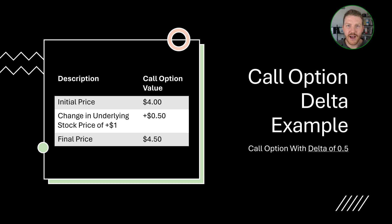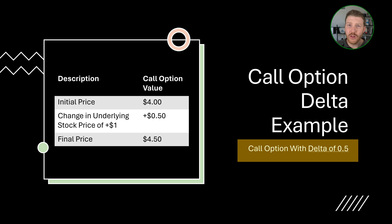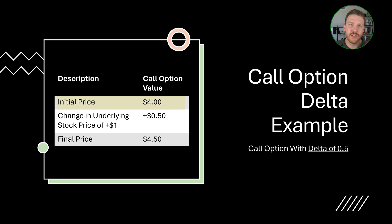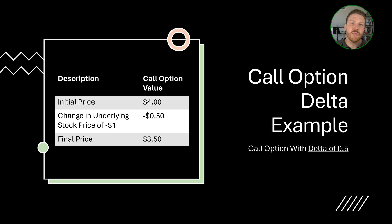Let's dive into an example. Imagine there is a call option underlying a stock. This call option has a Delta of 0.5 and currently has a price of $4. If the stock's price goes up $1, then the call option should go up by $0.50 and the final call option price will be $4.50. However, if the stock's price had fallen by $1, then the option's value would also fall by $0.50 and the new option price would be just $3.50.